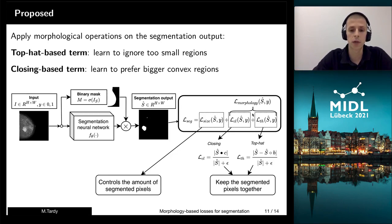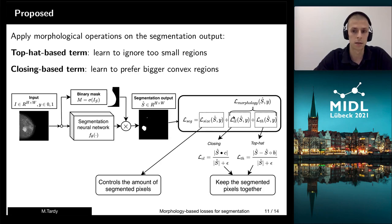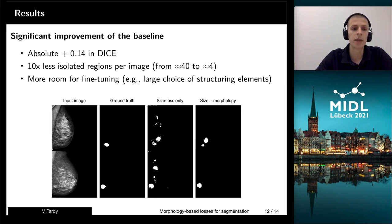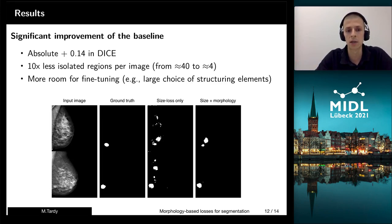Summing everything together allows us to first control the amount of segmented pixels, and second, keep all the segmented pixels together with these morphological operations. And as a result, we obtain something really cool. First, in absolute improvement of IoU, we get almost 14 points. We also have much fewer isolated regions per image, going from 40 to 4 isolated regions per image.